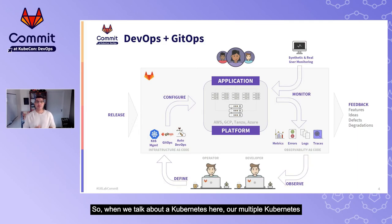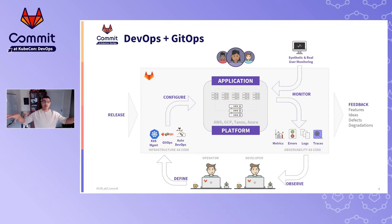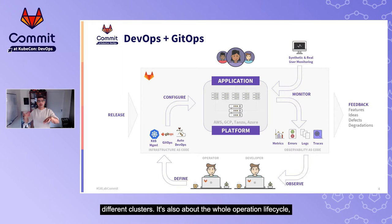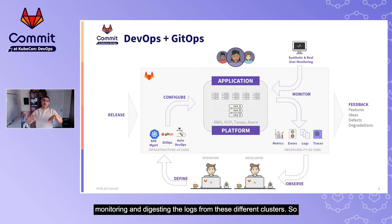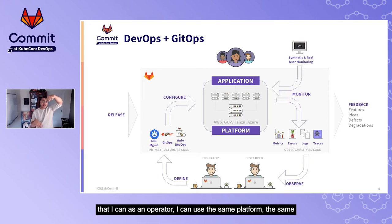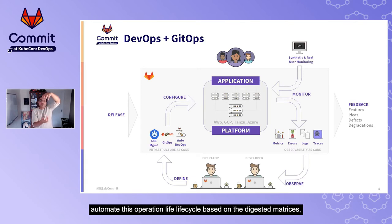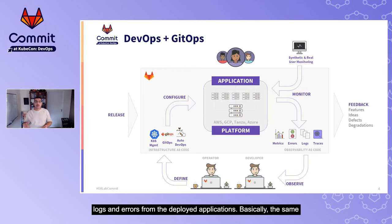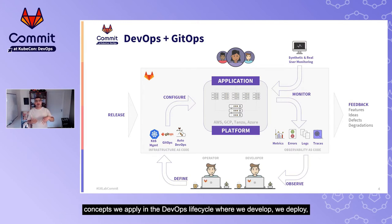When we talk about multi-Kubernetes clusters, it's not only about pushing the application to different clusters — it's also about the whole operational lifecycle. This starts from provisioning the clusters, then monitoring and ingesting logs from these different clusters, so that as an operator I can use the same GitLab platform to take actions like scaling up or down and attaching more resources, automating this lifecycle based on ingested metrics, logs, and errors.